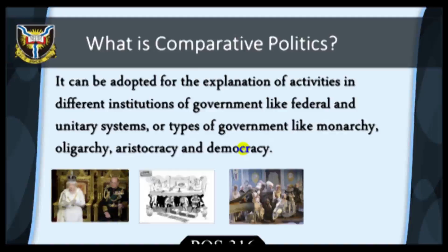Netherlands, Canada and Australia as the best governed in the world, while Somalia, Sudan, Niger, Nigeria and some others are categorized as the worst governed.